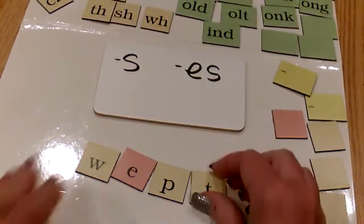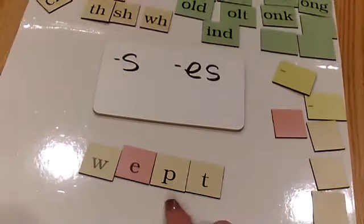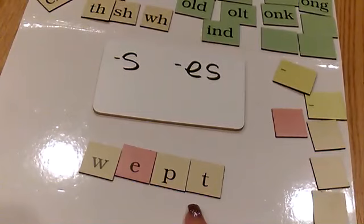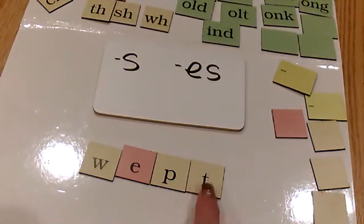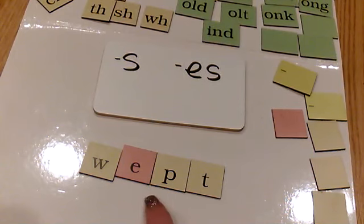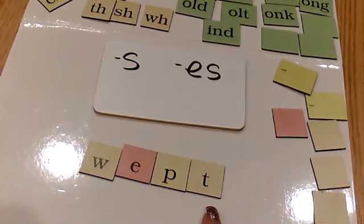I want you to think about that ending blend. We would mark it up by putting a little line and a little line. These are each a separate sound, but we do blend them together.